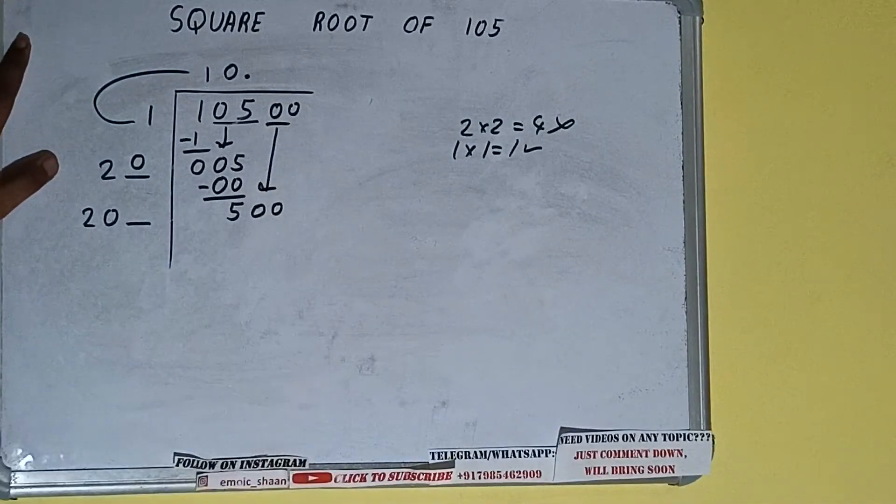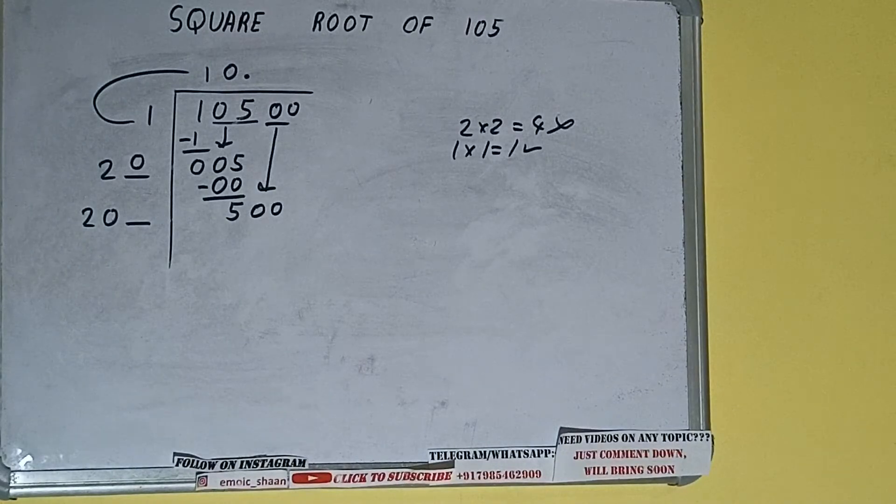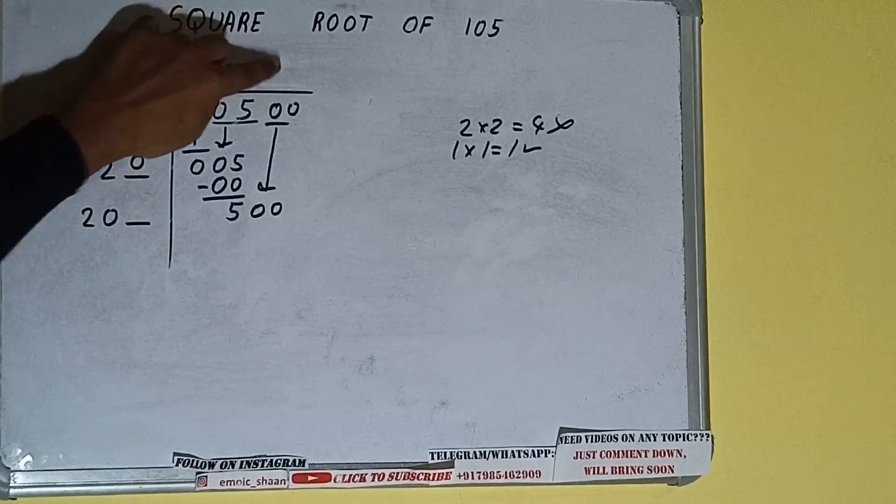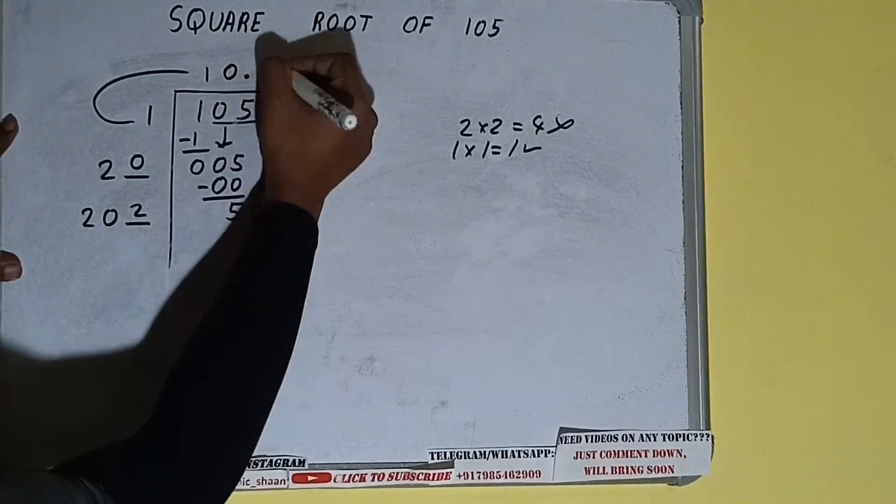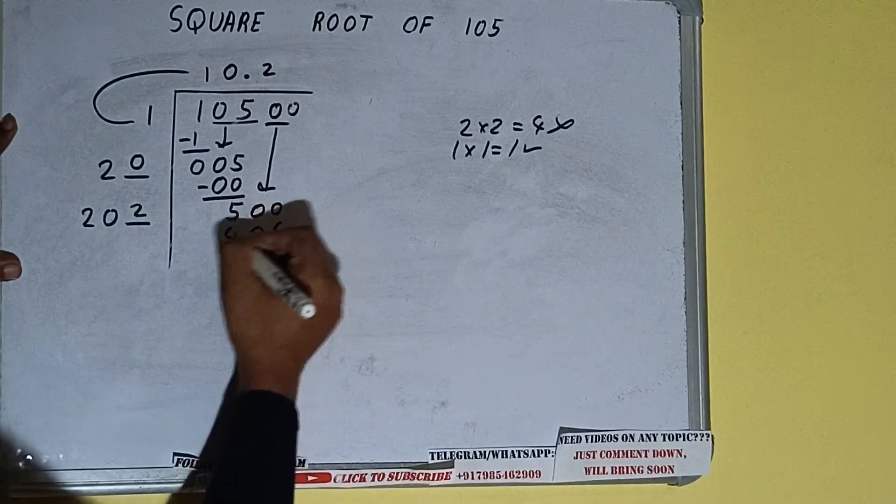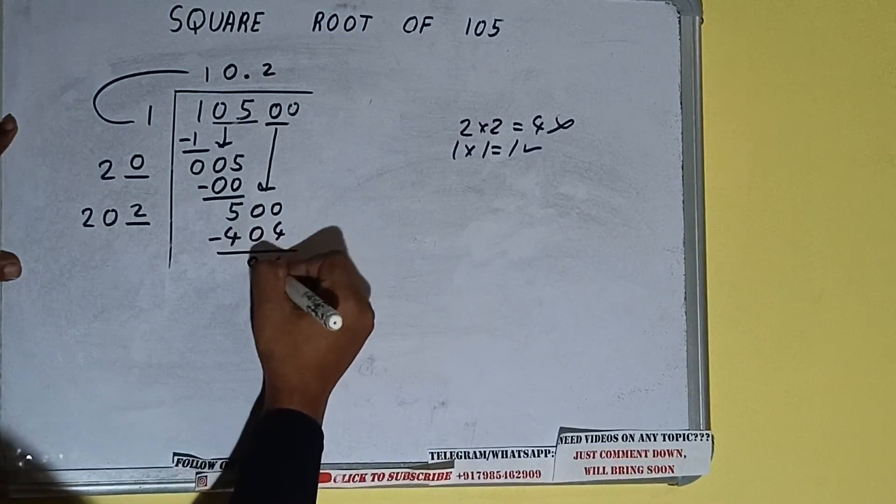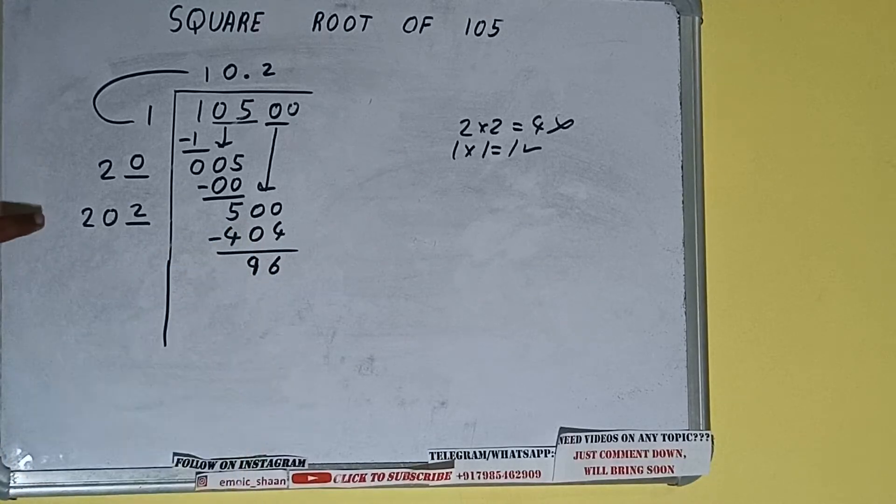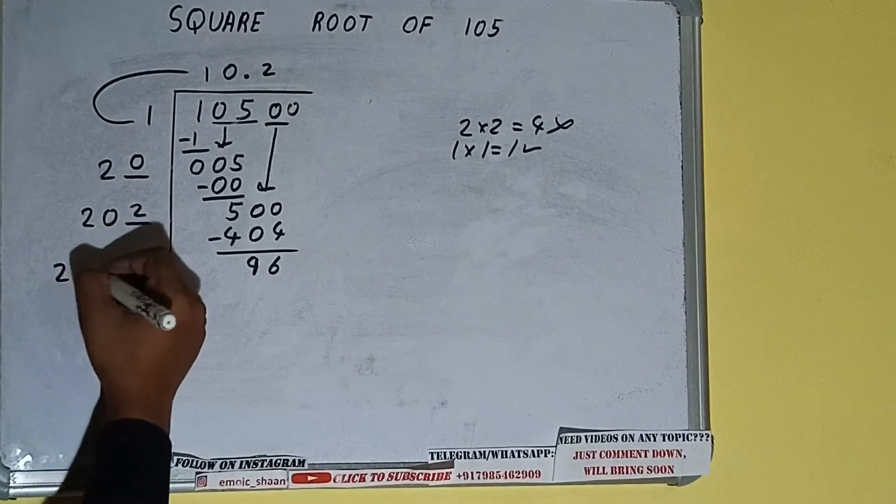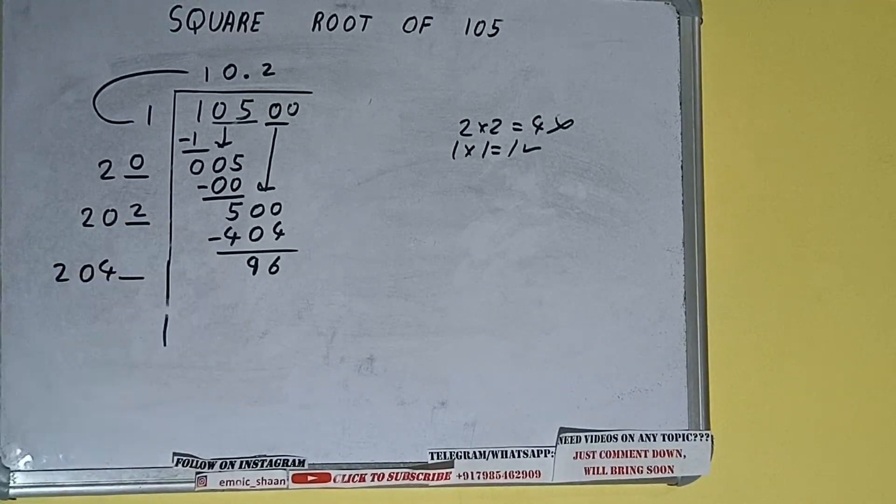And number will be 500. Now we can write two here and two here and we'll be getting 404. Subtract 96 will be left. Now 202 into two we did so add both. So 202 plus two will be 204 and one digit extra.